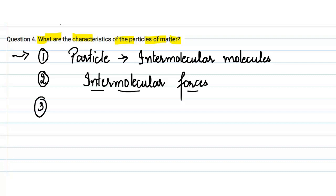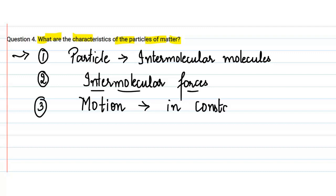The third characteristic is that the particles of matter are in constant, or continuous, motion — that means they are moving continuously. So these are the three main characteristics of the particles of matter.